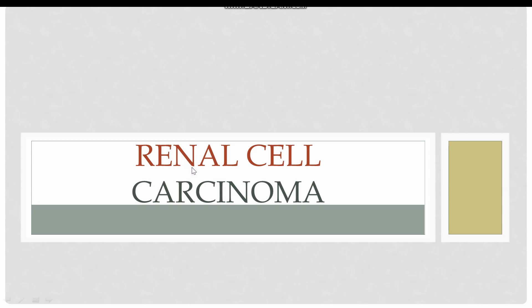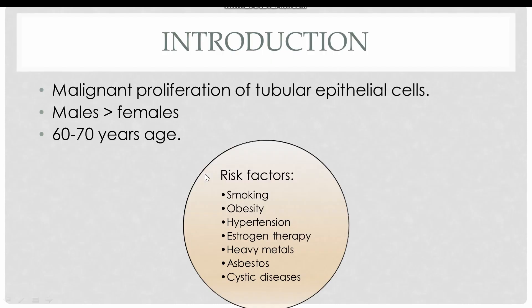The next topic of our discussion is renal cell carcinoma. Renal cell carcinoma is the malignant proliferation of tubular epithelial cells. It is more common in males than females, with a ratio of 3:1. The tumor is mostly discovered in the late age of 60 to 70 years.